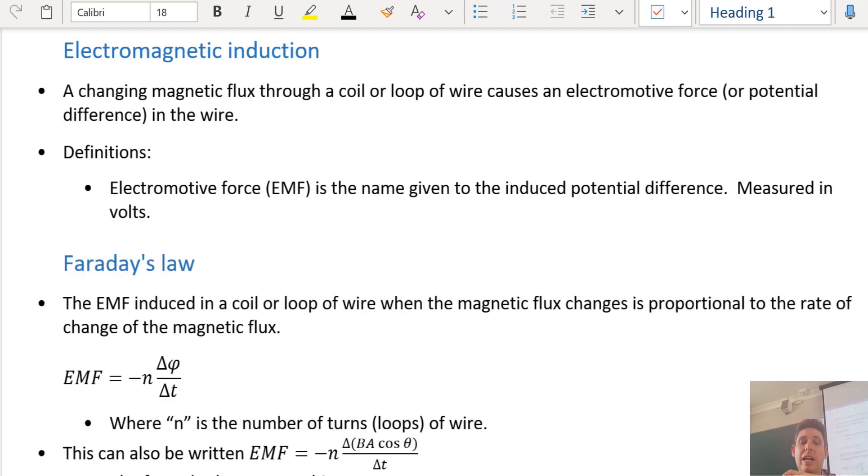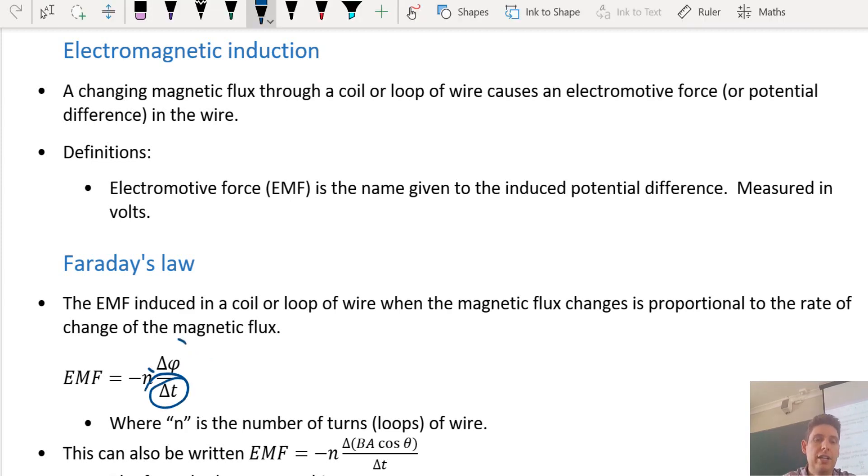Faraday came up with this: EMF, or volts, is equal to negative n. Little n is number of loops per meter, times by the change in the magnetic flux over change in t.